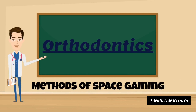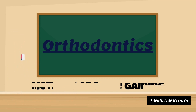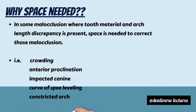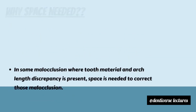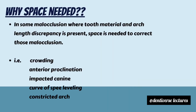Today we are going to discuss a topic from orthodontics known as methods of space gaining. The question arises: why is space needed? In some malocclusions where arch length and tooth material discrepancy is present, space is needed to correct those malocclusions. Examples are crowding, anterior proclination, impacted canine, curve of Spee leveling, and constricted arch.